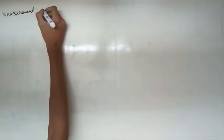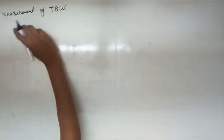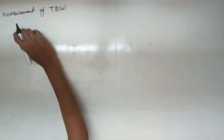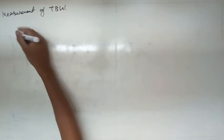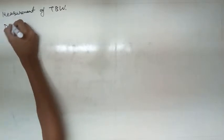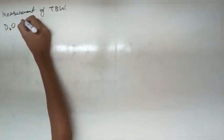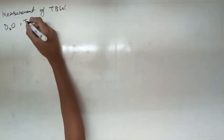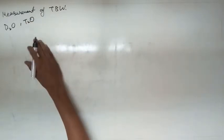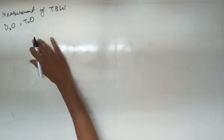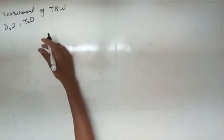Now, if you have to measure the total body water — measurement of total body water — we have to use a fluid or marker that is distributed all over the body. So we use deuterium oxide, as mentioned earlier. It gets mixed with all the fluids in all compartments; when we inject it, it mixes up with all fluids within just a few hours.